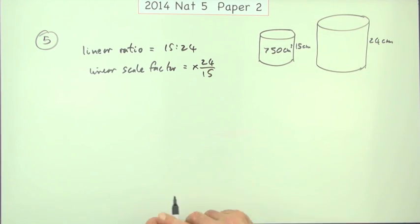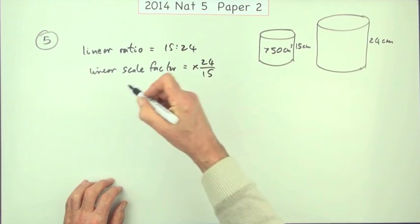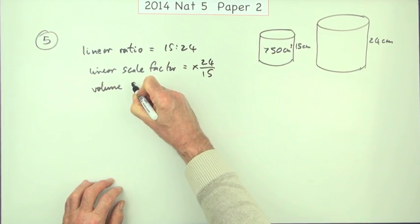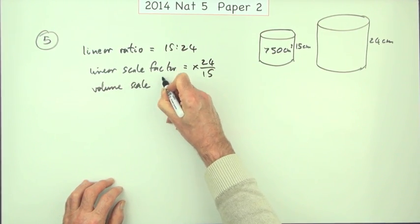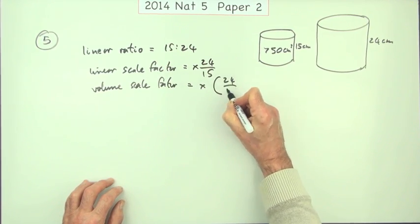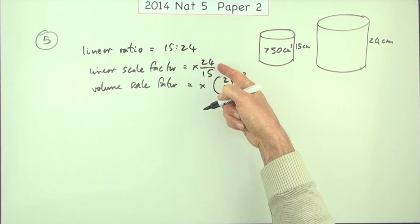And for the volume, since it's three-dimensional, you'd be multiplying by that factor three times. And that's what you want here. You want a volume. So the volume scale factor is going to be multiplying by that to the power three. Because each dimension is going to get multiplied by that.